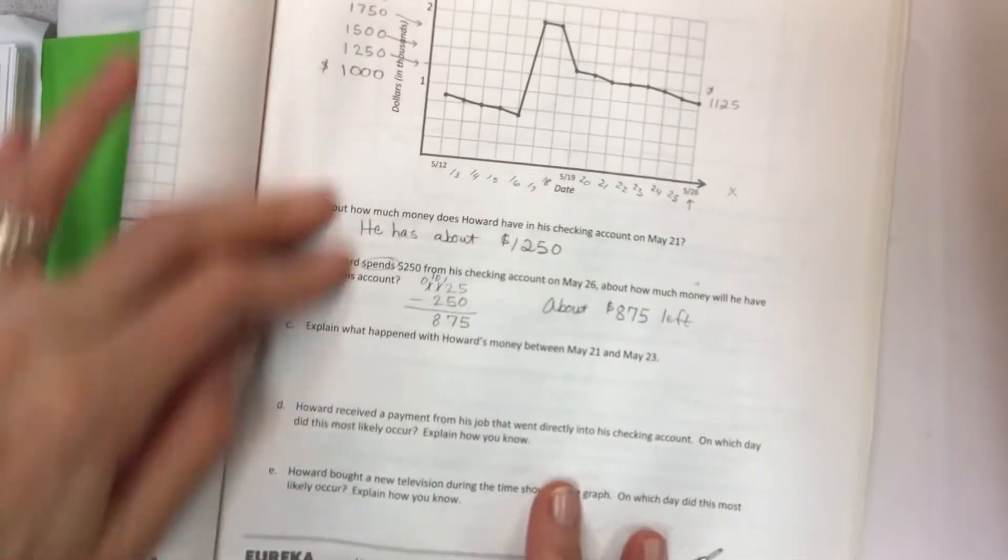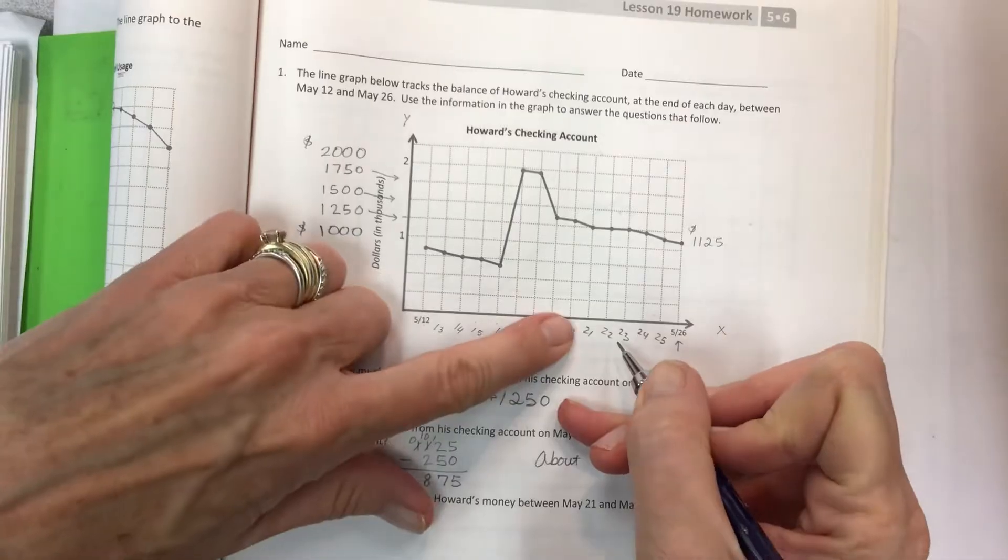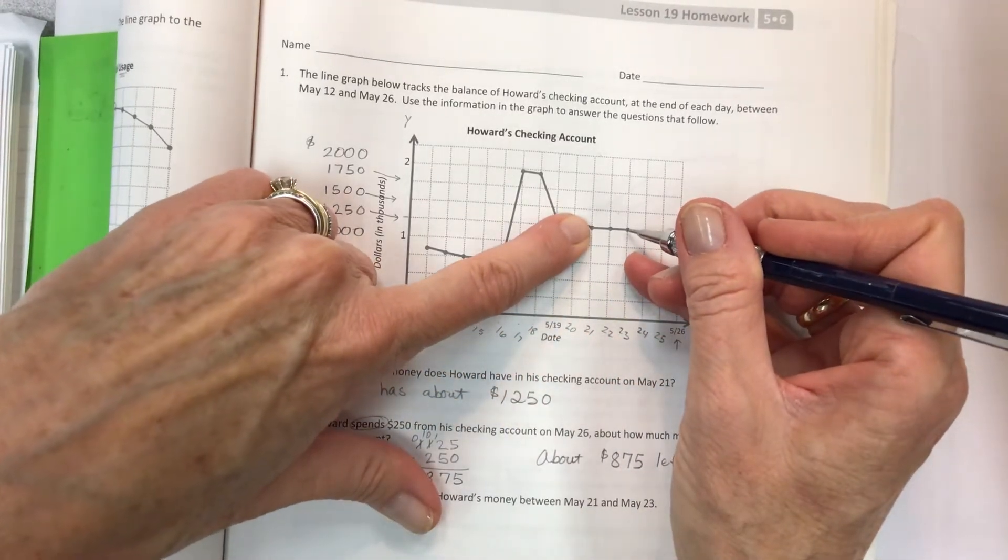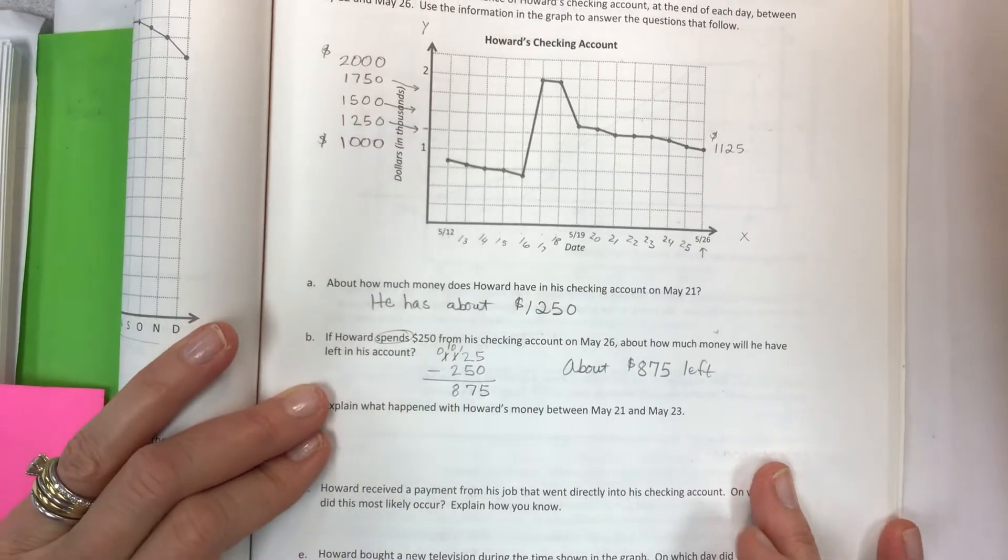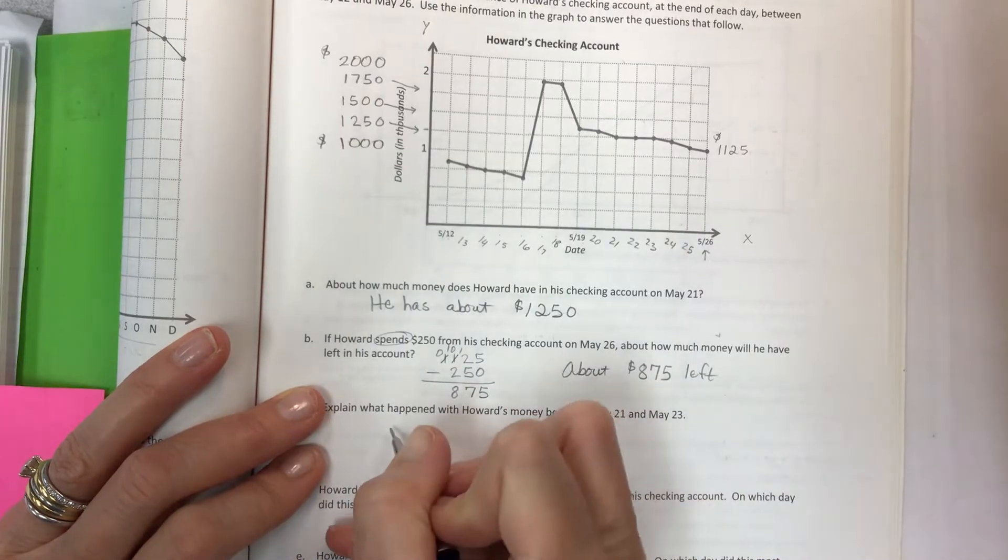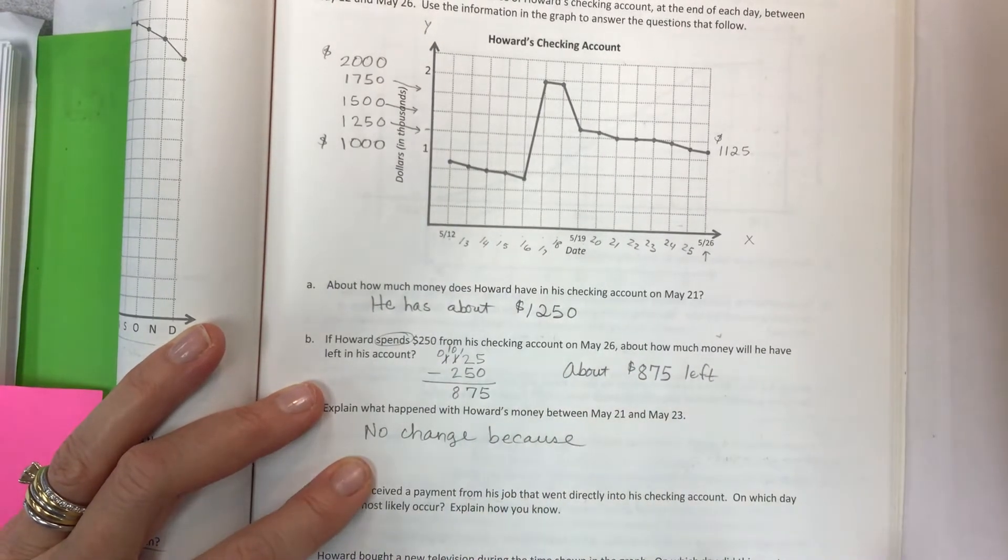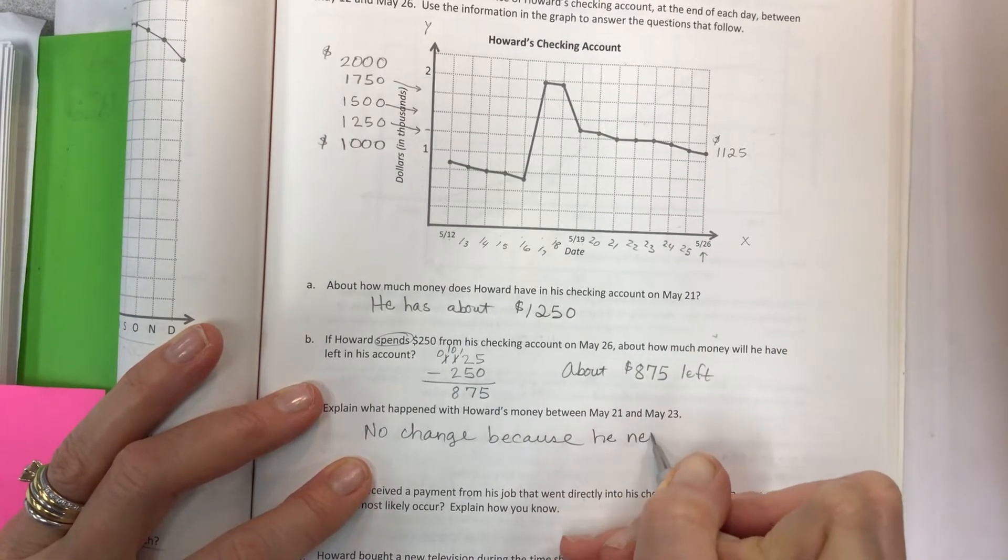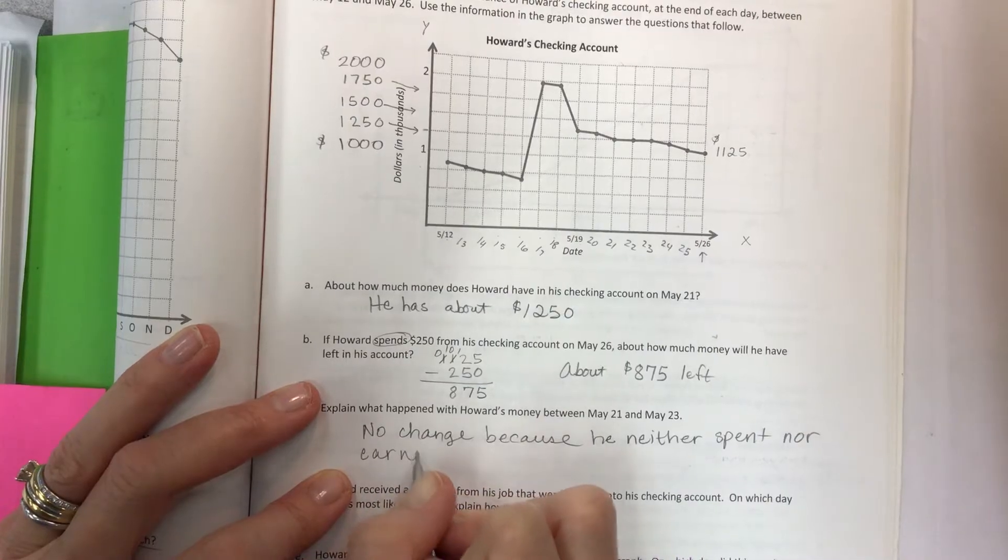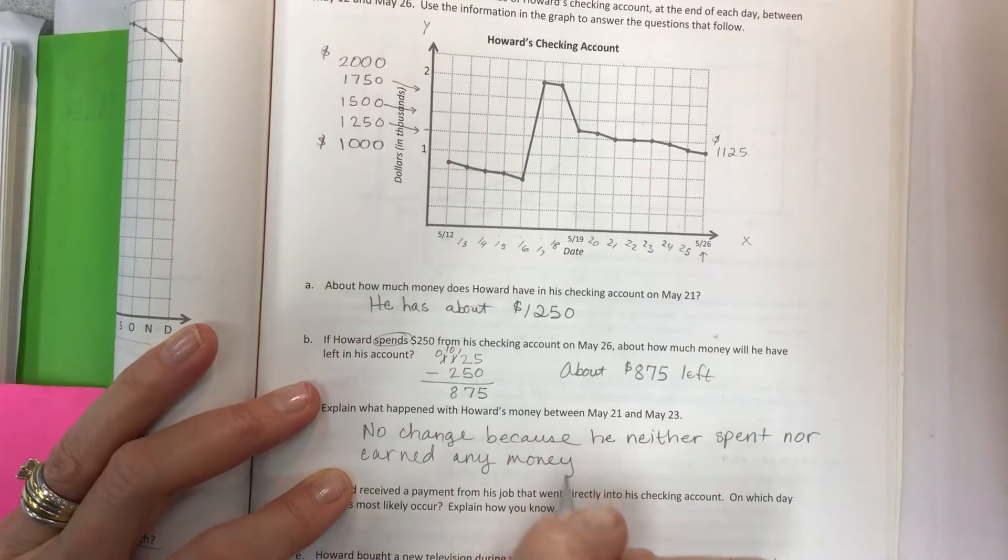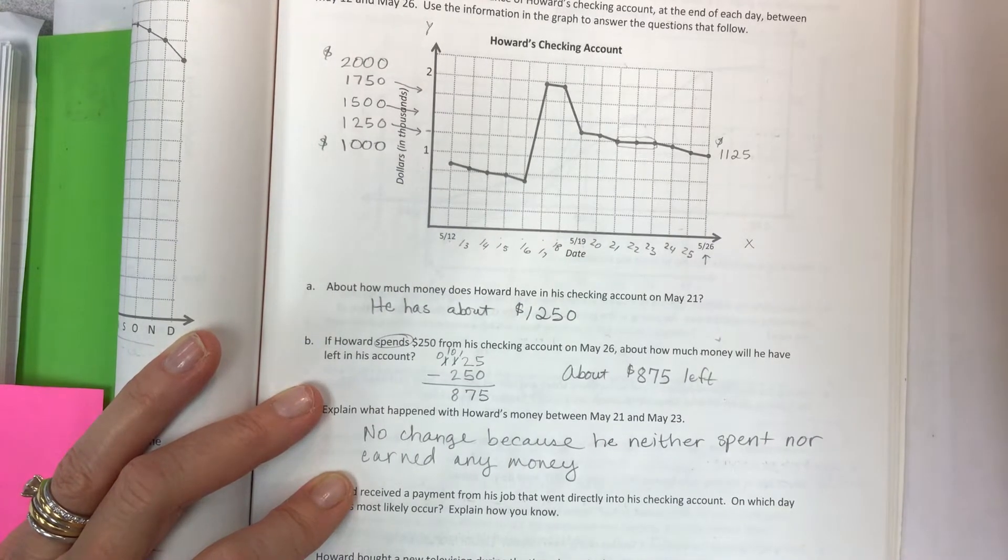For C, explain what happened with Howard's money between May 21st and the 23rd. Let's take a look at this, May 21st and 23rd. So go up here and look at the graph, and there's no spike and there's no drop. So it's flat. On previous graphs we had talked about what happens when the graph goes flat and there's no change. No change because he didn't spend anything, but he didn't earn anything either. He neither spent nor earned any money. When it's flat, there is no change. Just like on the other one with the tomatoes, no growth.